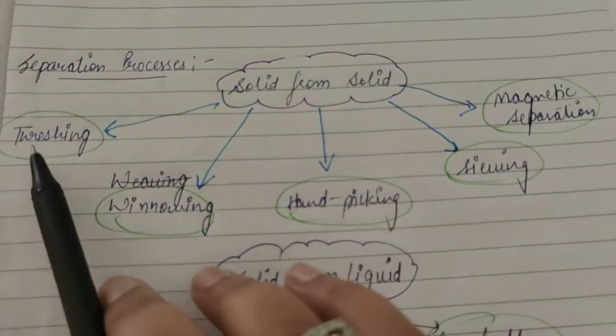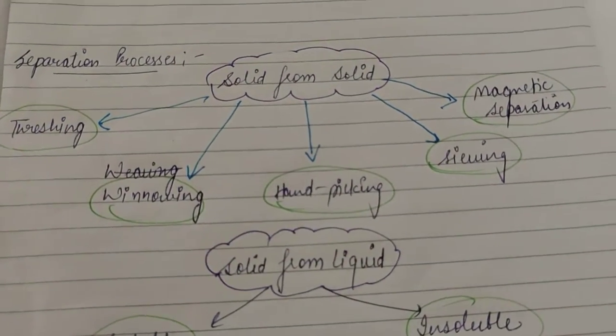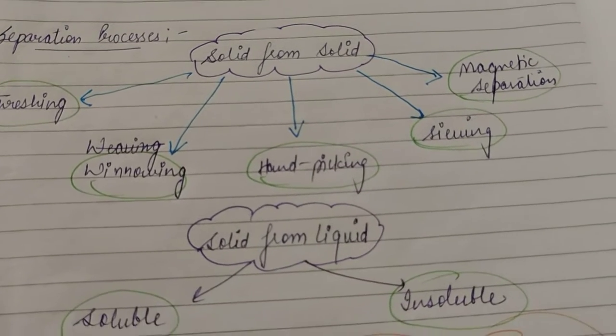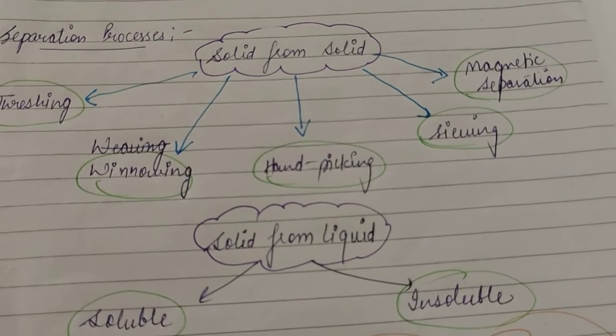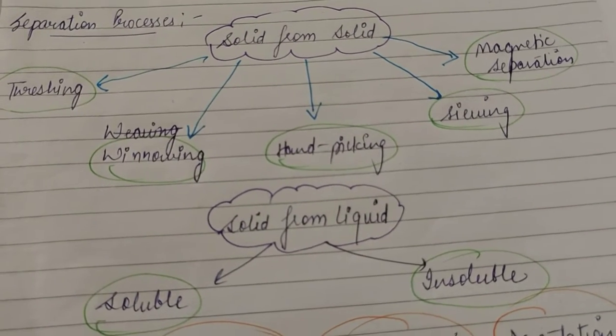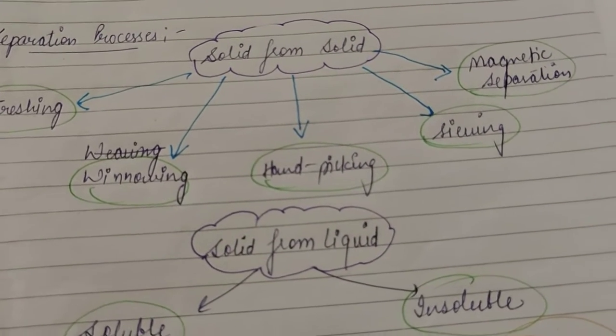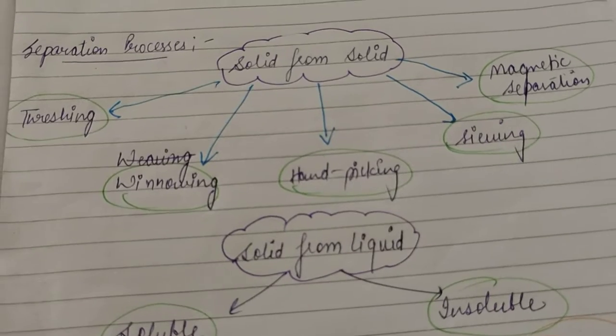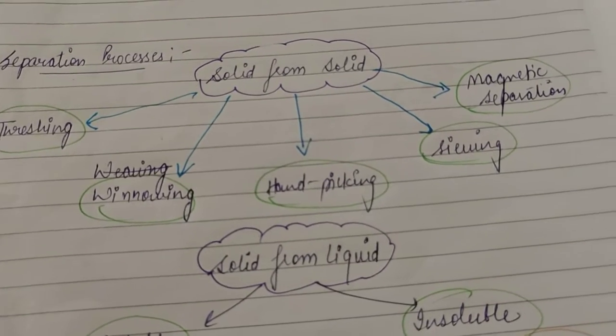First of all, if we talk about threshing, then what is done in threshing? In threshing, the outer covering or the peels or the chaff of the grains are separated from the grains by hitting them on a hard ground. That is threshing.